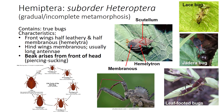Hemiptera, which means half-wing, contains a large group of mainly plant pests but also some predators. Half-wing calls attention to how the front wings are half leathery and half membranous, termed hemelytra. They have incomplete metamorphosis and piercing-sucking mouthparts, often called a beak, which are used to suck the juices out of a plant or insect prey. The suborder Heteroptera refers to the true bugs, so if you call all insects bugs and it is not in this order, then you are doing them an injustice.